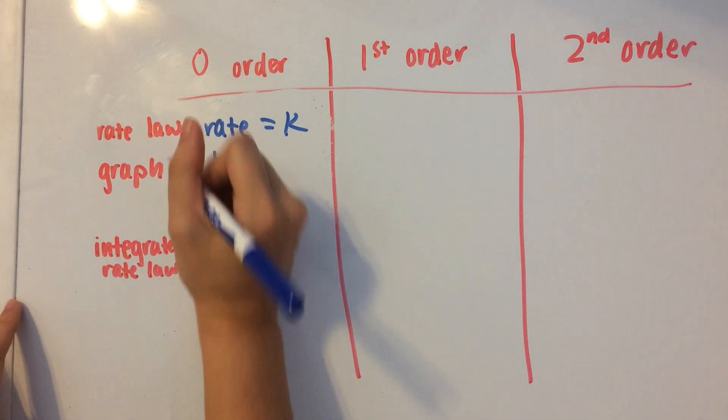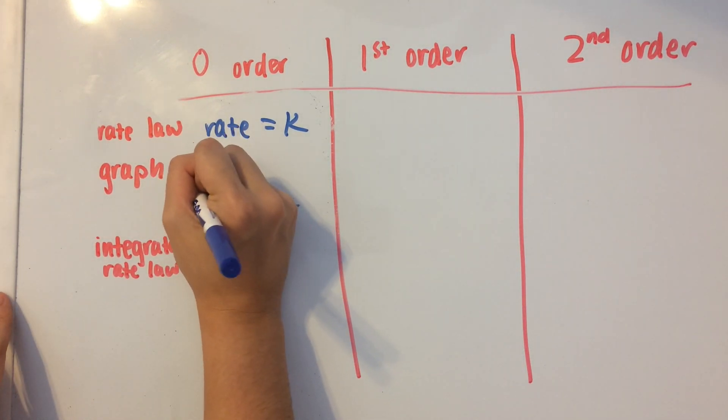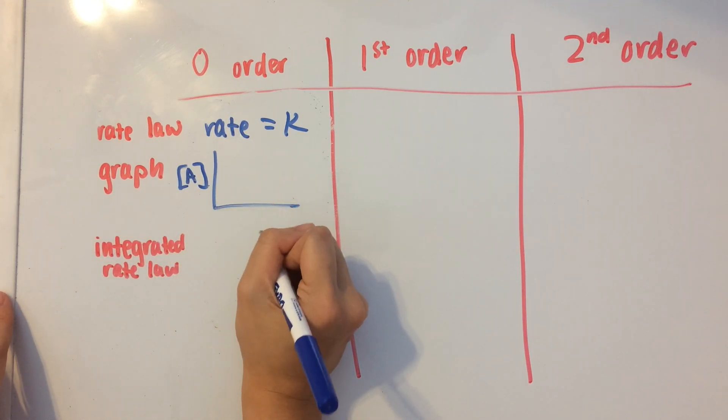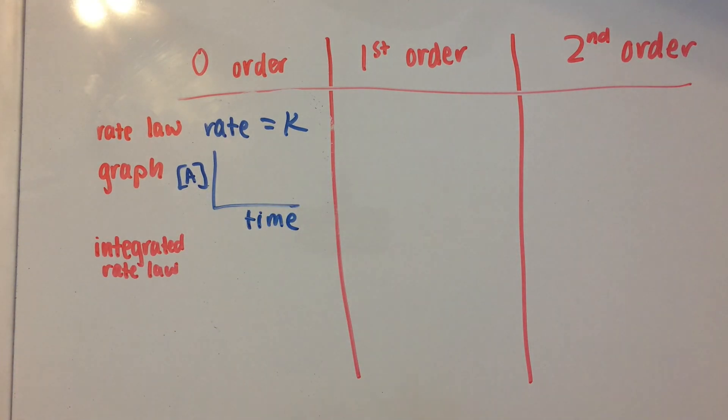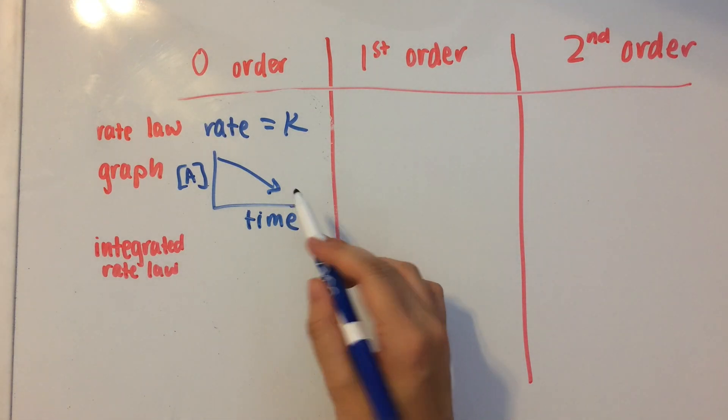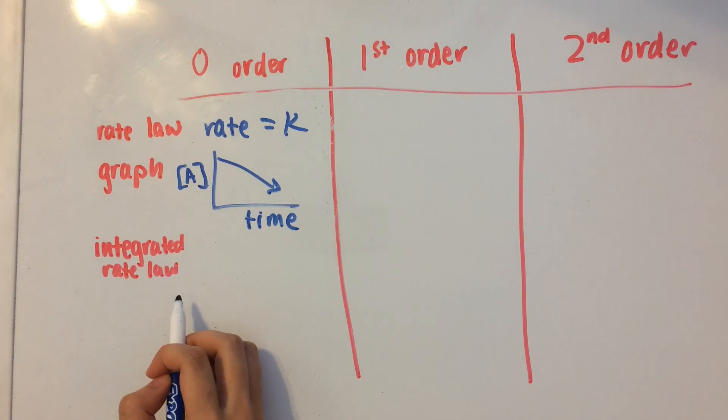So what the graph looks like is we have concentration of any reactant, let's say reactant A, on the y-axis and then time on the x-axis. It's going to look like a line with a negative slope, and we can use the integrated rate law to describe this graph.